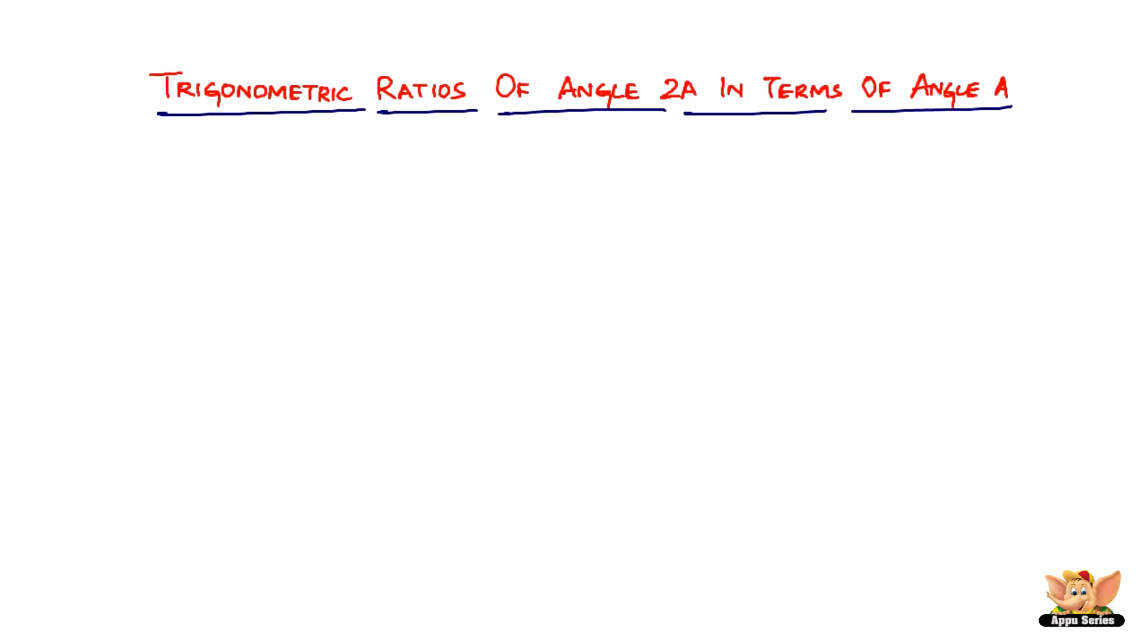Alright, so let us look into those results. One of the trigonometric ratios of angle 2a in terms of angle a is here. Sine 2a, if you want to write it in terms of angle a, you can write it as 2 sine a cos a.